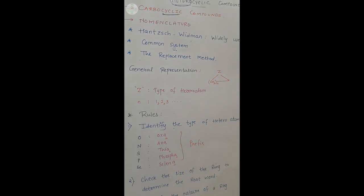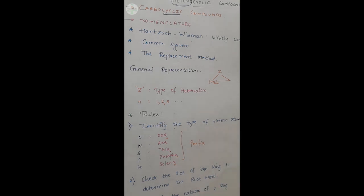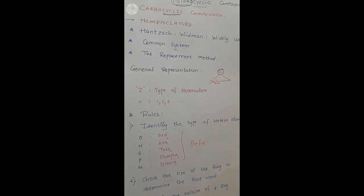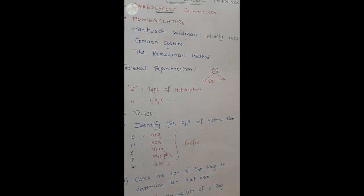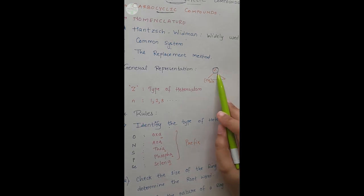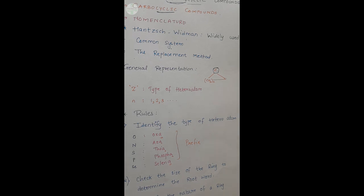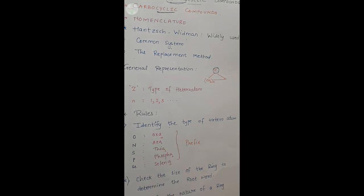Heterocyclic nomenclature के लिए there are certain rules. जैसे किसी भी organic compound का नाम देने के लिए हमें कुछ rules follow करने होते हैं, same way for heterocyclic compounds also we have to follow certain rules. The first and the most important rule is you have to identify the type of hetero atom, यानि कि Z के बदले कौन सा atom है ये हमें identify करना है. Because once you identify what Z is, we will decide the prefix which is to be written while writing a name. यानि कि Z के nature से हमें prefix पता चलेगा. Suppose Z के बदले oxygen है, so oxygen के लिए prefix आएगा 'oxa'. If it is nitrogen, the prefix will be 'aza'.